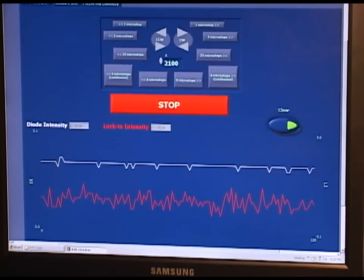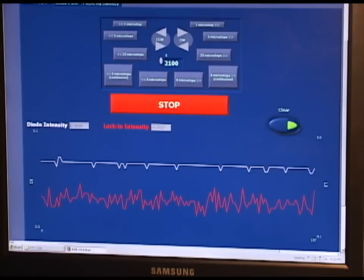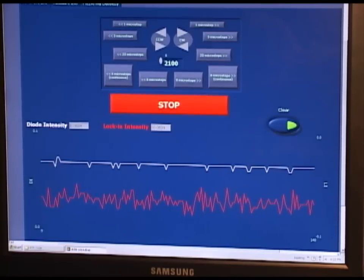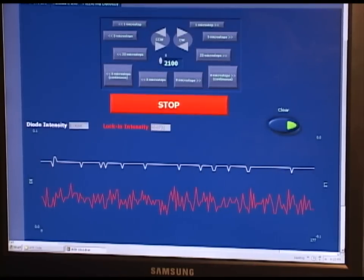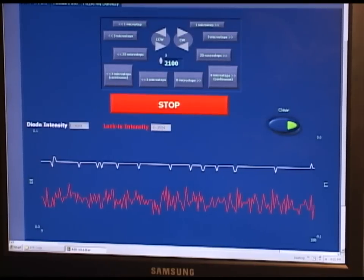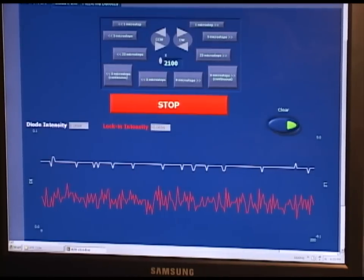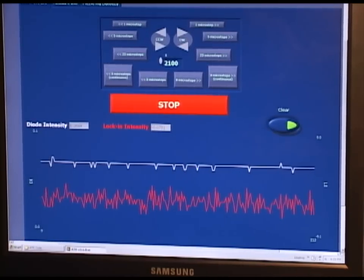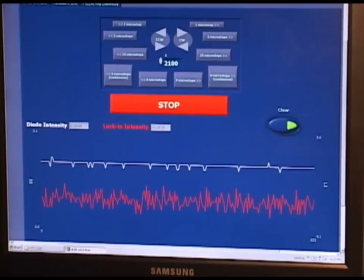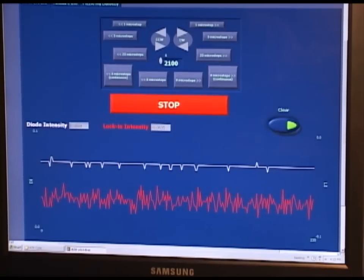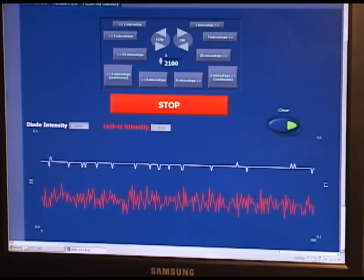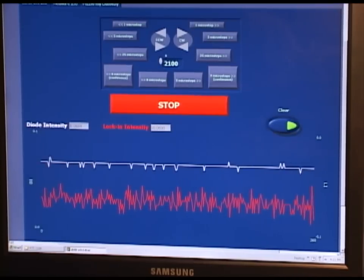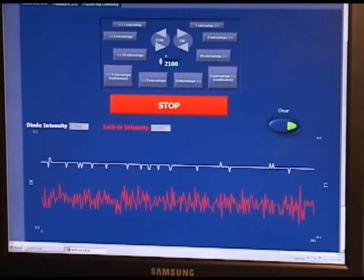Now we want to rotate the sample and prism setup to search for modes. Modes are points at which there is total internal reflection. These occur at what we call critical angles. So we will rotate the sample to find these critical angles. Once we have found a suitable mode, we begin calibrating. First, I will begin rotating the sample to search for a mode.